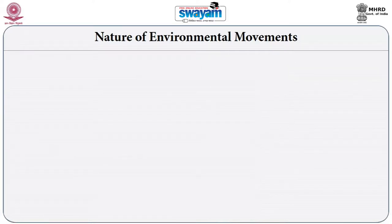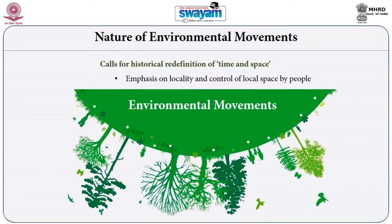The third characteristic of contemporary environmental movements is that they call for a historical redefinition of time and space. They emphasize locality and control of local space by the people. If you look at the second category of environmental movements — the defense of local space — these movements essentially talk about local autonomy.